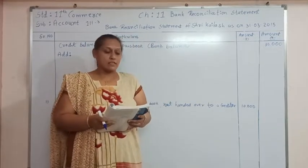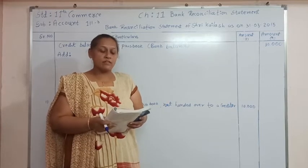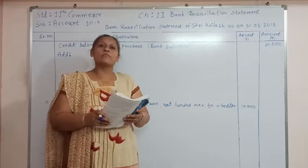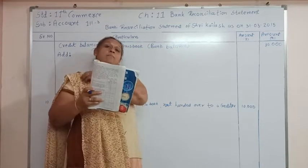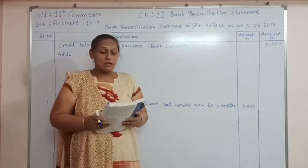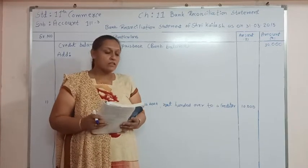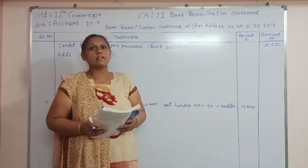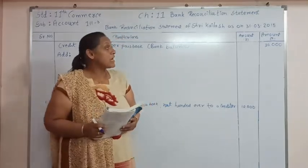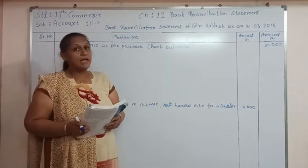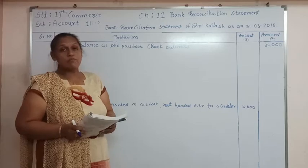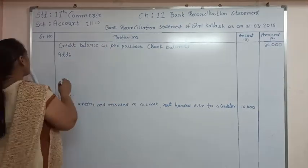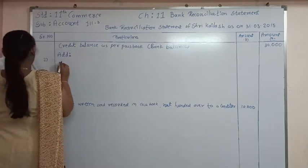Transaction number 2: a check of rupees 30,000 was banked on 28/3/50, but credit was given by the bank on 14/5/0. So a check which is deposited in the bank but credited after 31/3/50 — we have to add the same amount to the passbook balance. So for transaction number 2, check deposited but not yet credited: we add it.